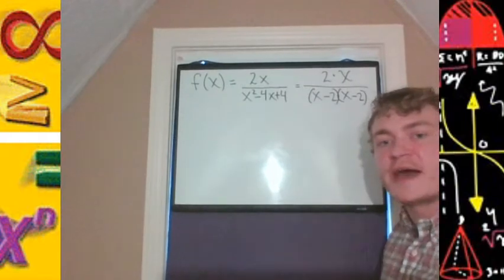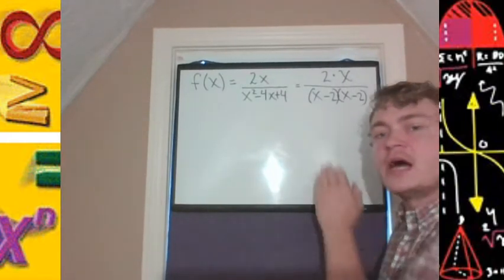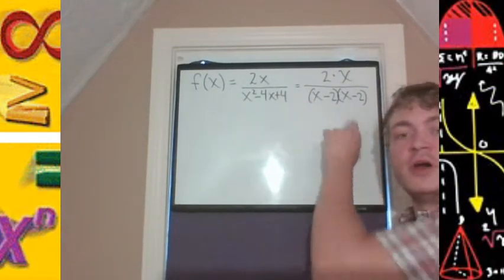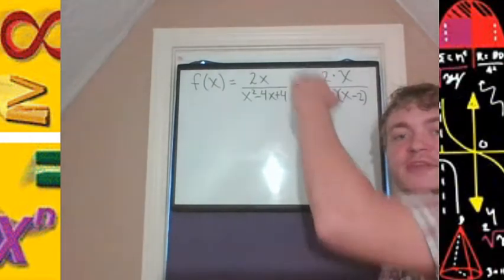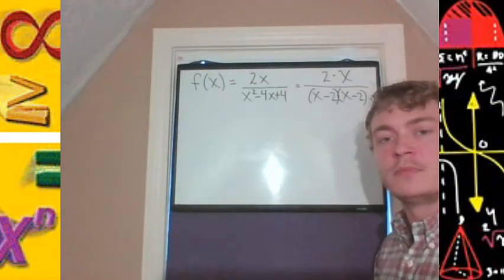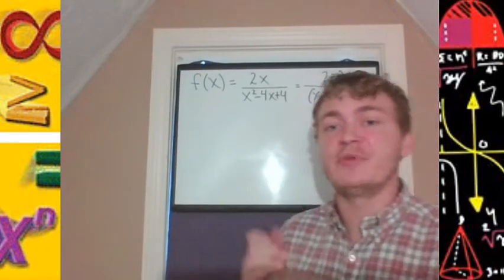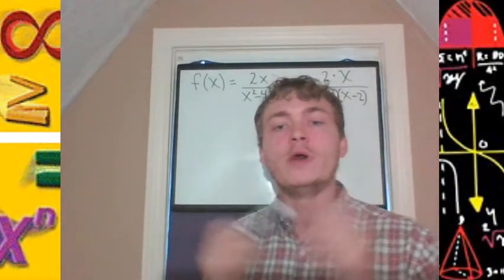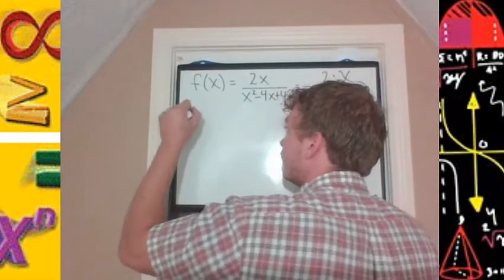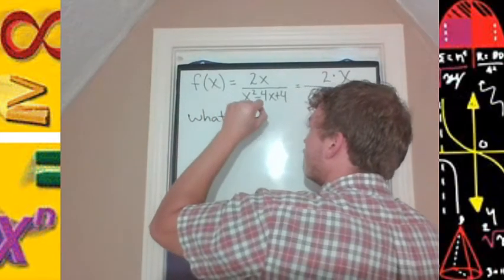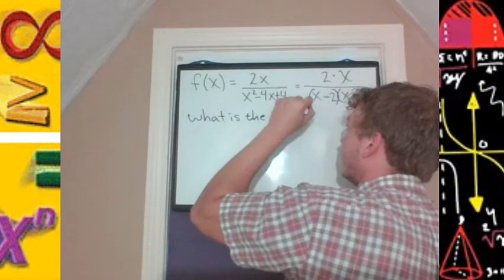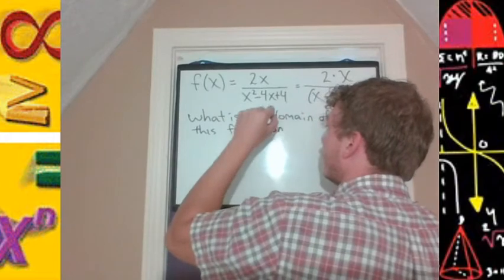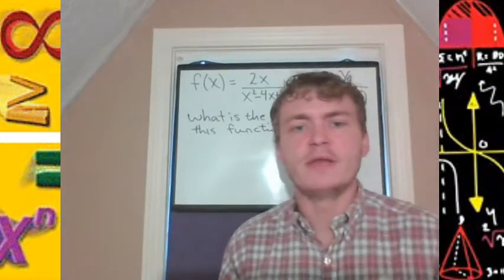Our numerator has two factors: 2 and x. Our denominator has two factors: x minus 2 and x minus 2. None of the numerator factors match the denominator factors, so we can't cancel anything. That's the simplifying process — factor the top and bottom and cancel common factors. Here, we want to know what the domain is.